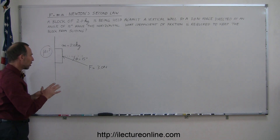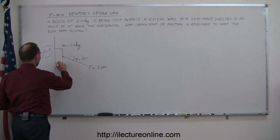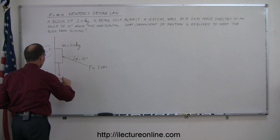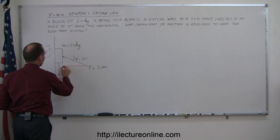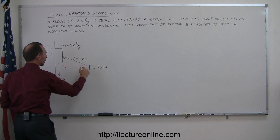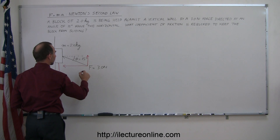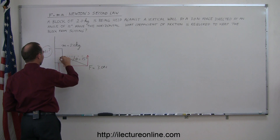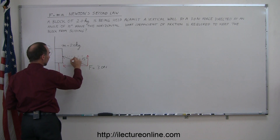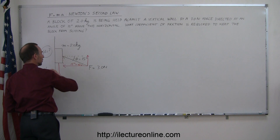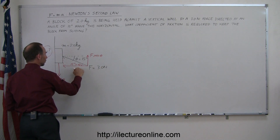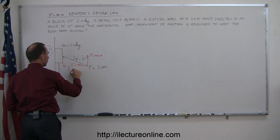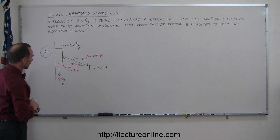Let's draw the forces on the block. We have the weight mg pulling down, and the applied force has a vertical component and a horizontal component. The vertical component pushes the block upward, and the horizontal component pushes the block into the wall. Since the angle is 15 degrees, the vertical component is f times sine of theta, and the horizontal component is f times cosine of theta.